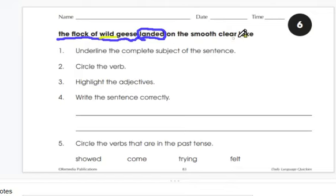Landed is a verb. Lake is a noun. What kind of lake is it? It's smooth and clear. So our adjectives that you should highlight are wild, smooth, and clear.